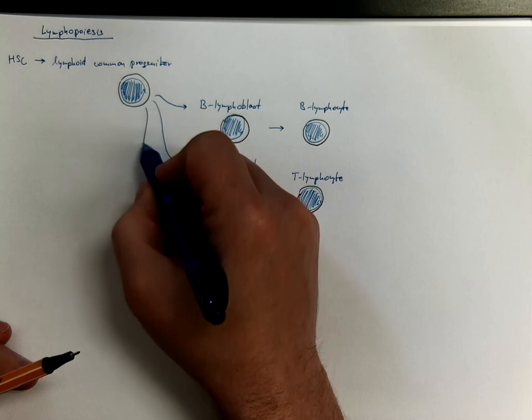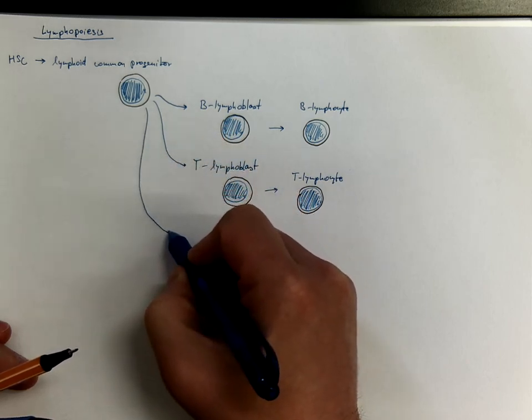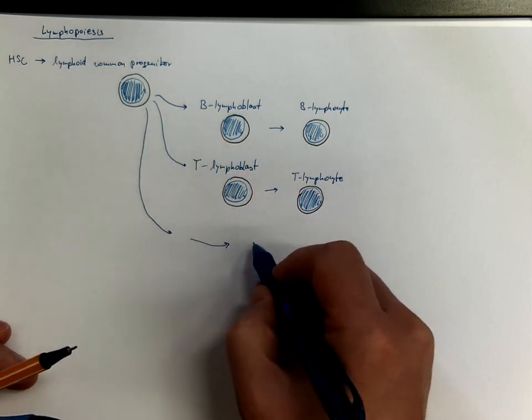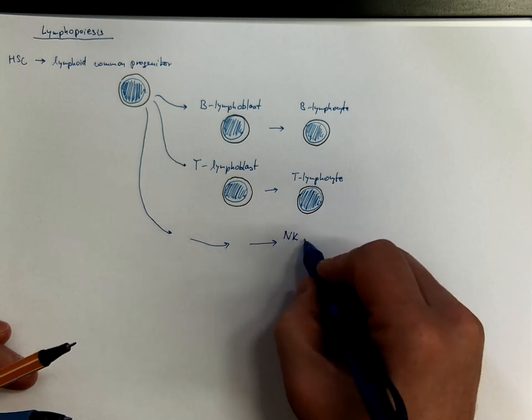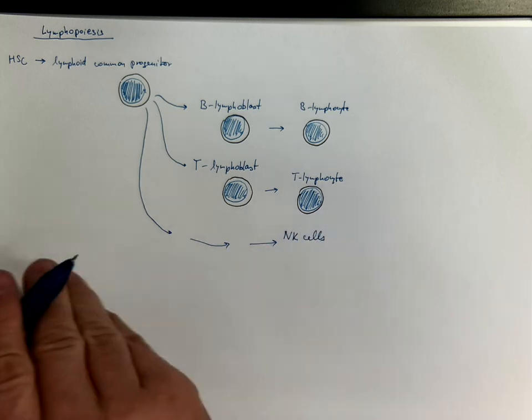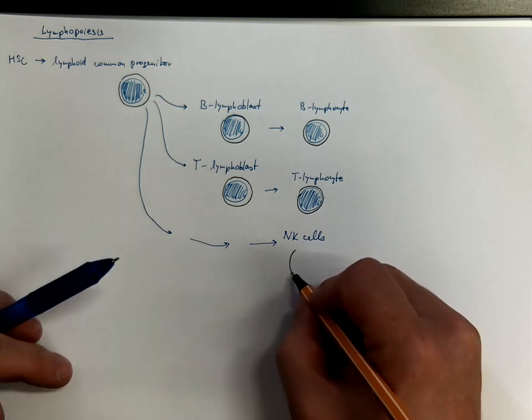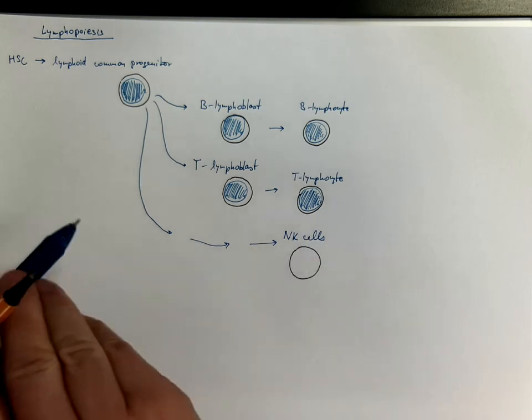Another lineage separate would be the one leading to natural killer cells that look like large lymphocytes.